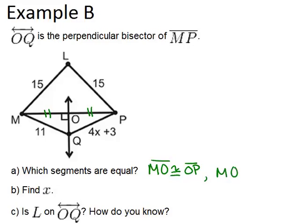Similarly, MQ is congruent to QP. And the reason for that is that Q is a point on the perpendicular bisector, which means that it has to be equidistant from P and from M. So MQ has to be the same length as QP.